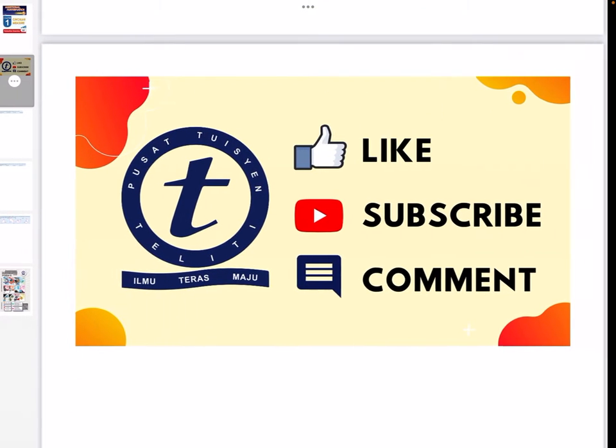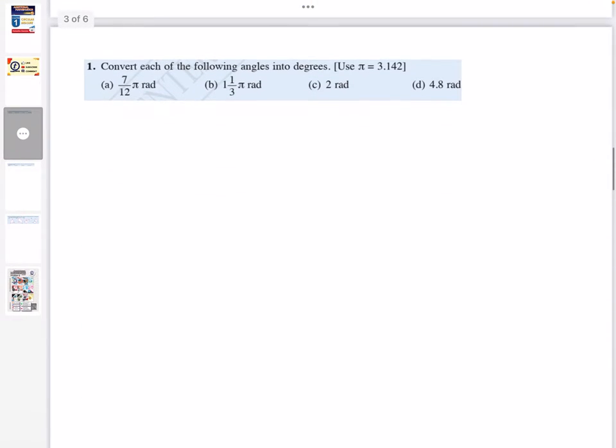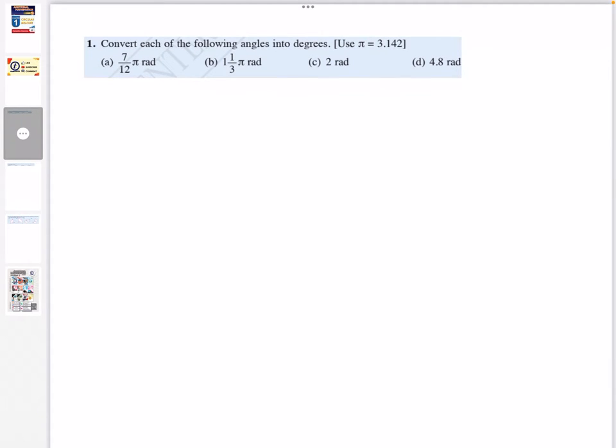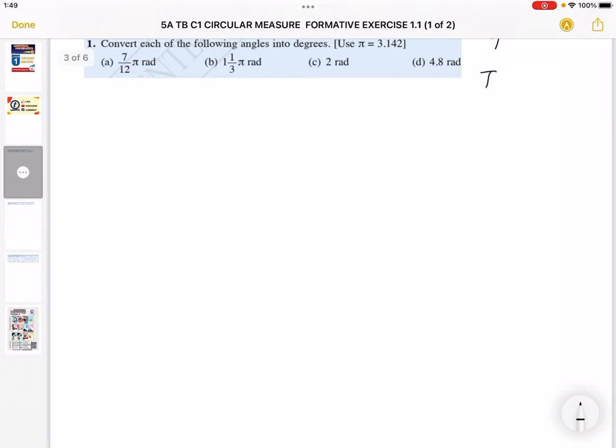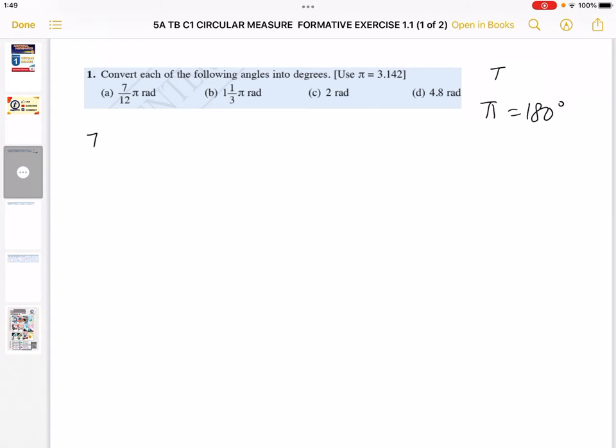So let's begin with the first question. Question number one: convert each of the following angles into degrees. Very simple. We know that the relationship between degrees and radians is 1 pi radian equals 180 degrees.